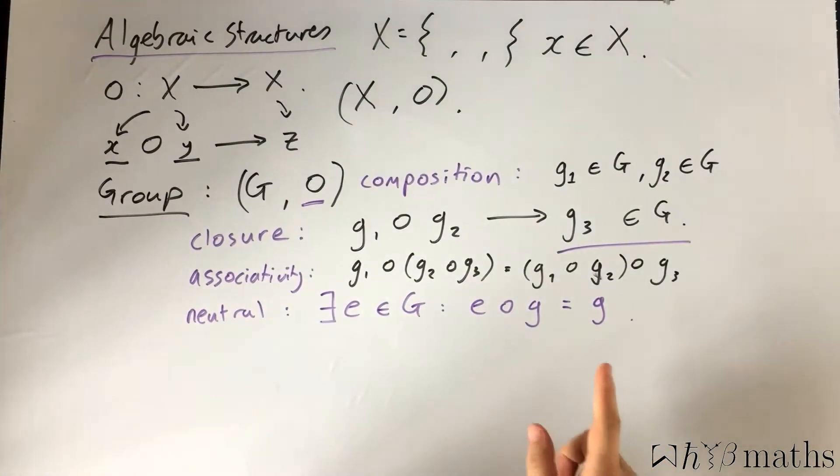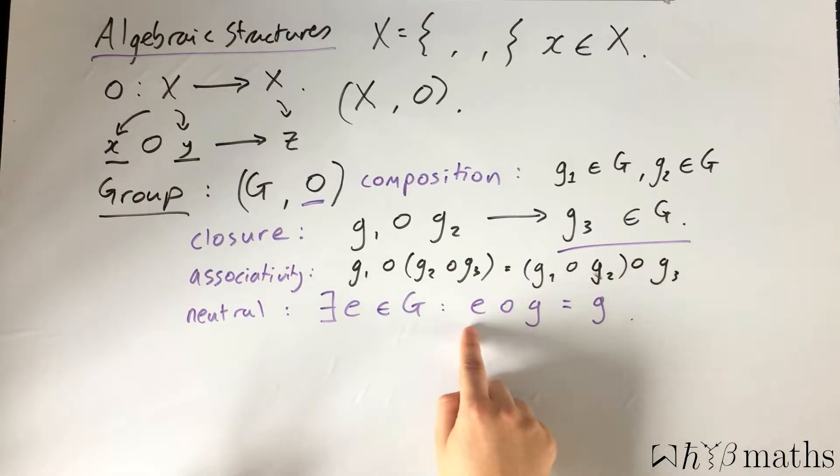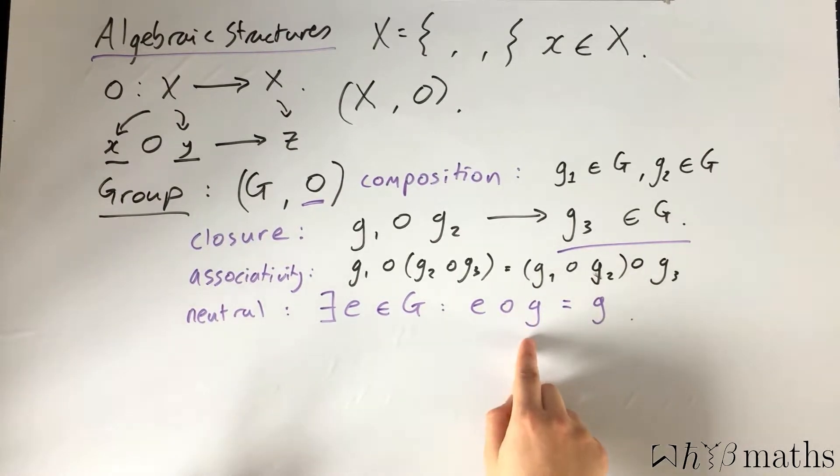The neutral axiom states that there exists a particular element in the group, such that when you compose that element with any other group element, you just are returned the same group element.